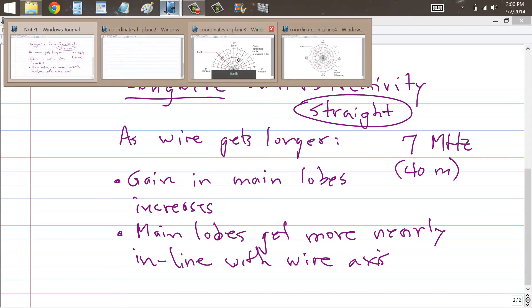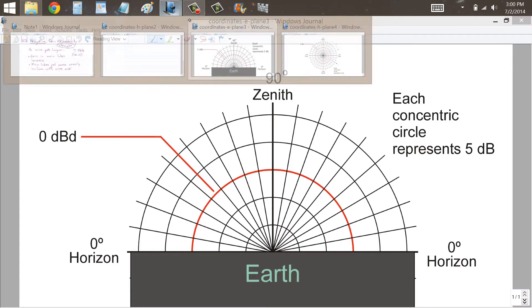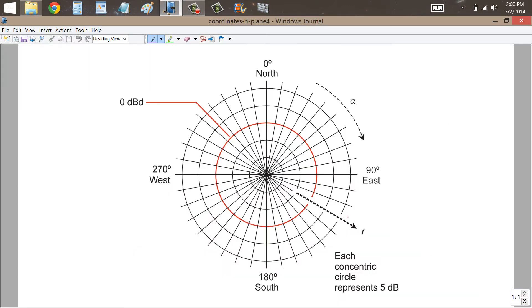Now to that end, what I've decided to try and do here is show you a directional pattern or two for a long wire antenna, let's just say hypothetically running east and west. So this is the wire axis. This is an H-plane pattern here, meaning that it's in the horizontal plane.